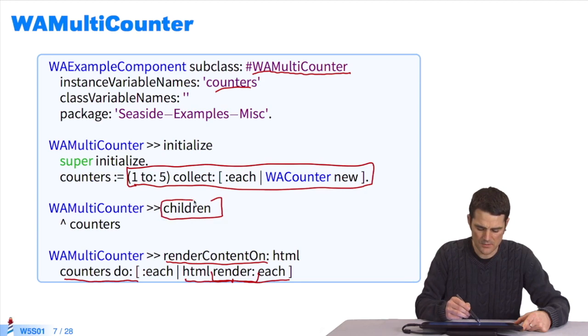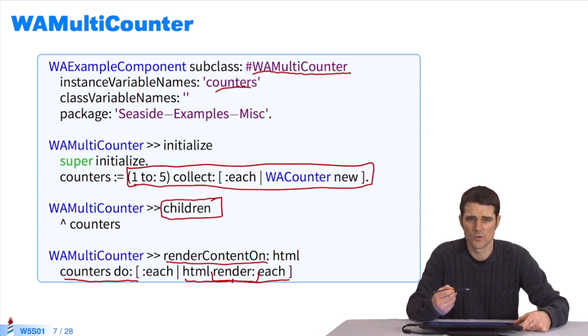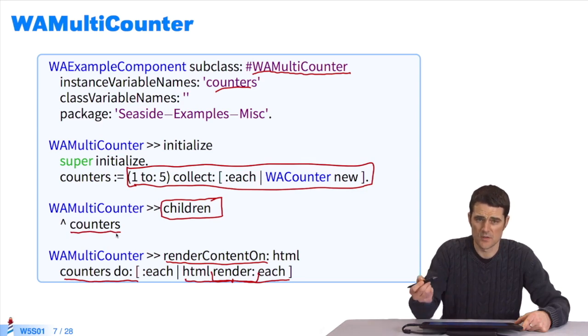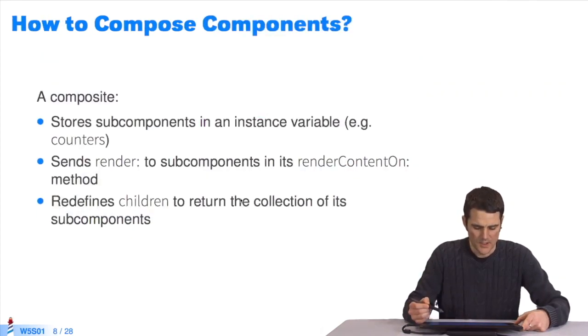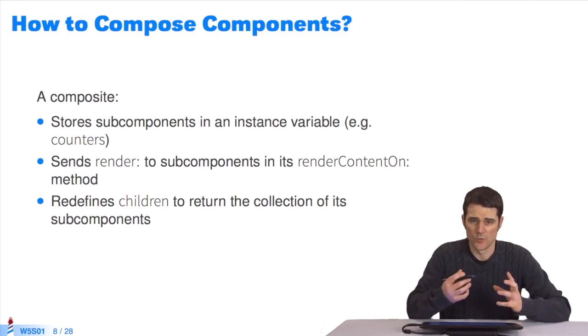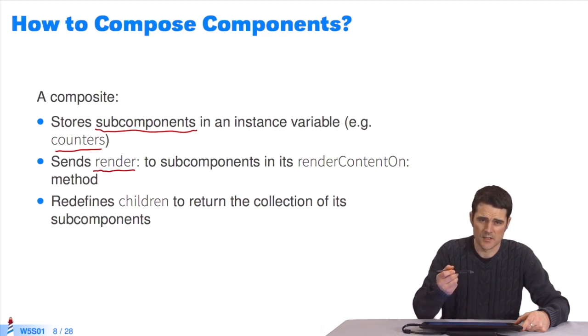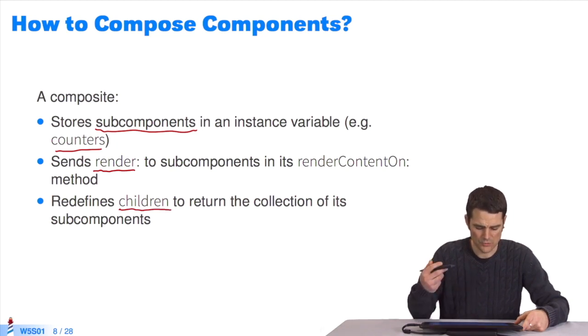We've an important method here called children, which means that when a component encapsulates other components and asks them to render in renderContentOn, it has to declare them. It has to return a collection of components in its method children, which contains all the components it's going to render, all its children. Here, I'm rendering the collection counters. It's an important method to define. The basic rules for aggregating components: one component will store its subcomponents in an instance variable. In our example, it's counters. It will then pass the render message to HTML in its renderContentOn method, asking each child to render itself. It will then redefine the method children to declare all of its subcomponents.